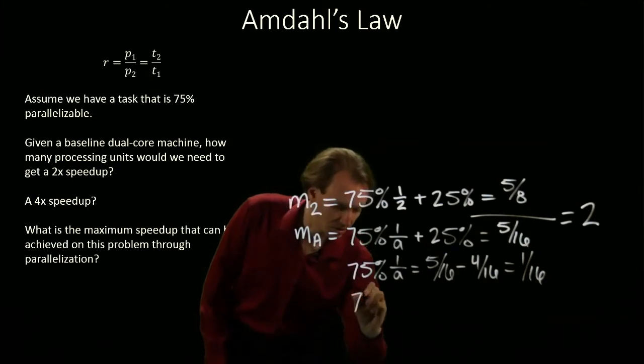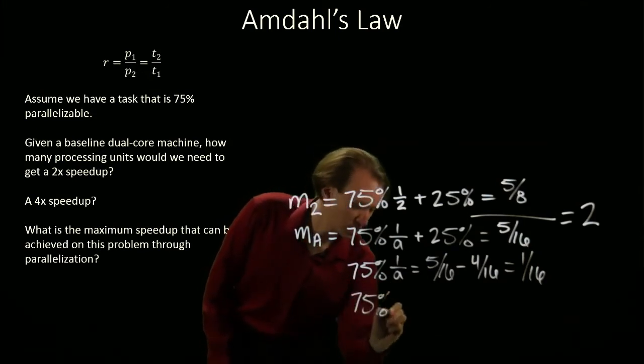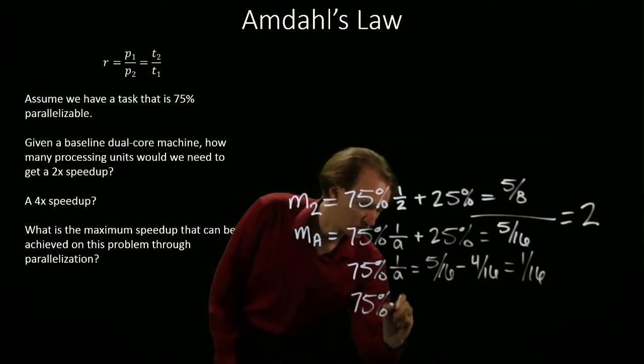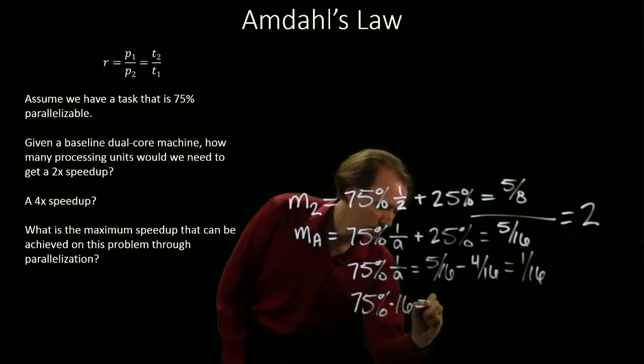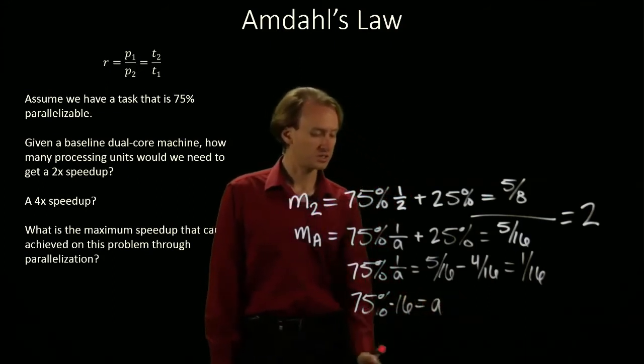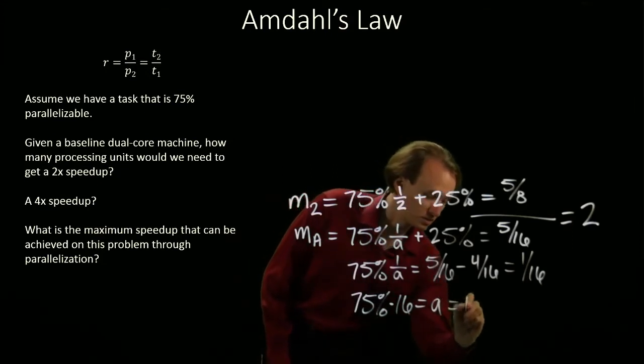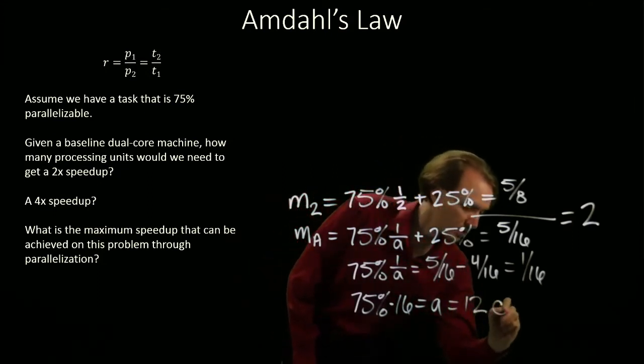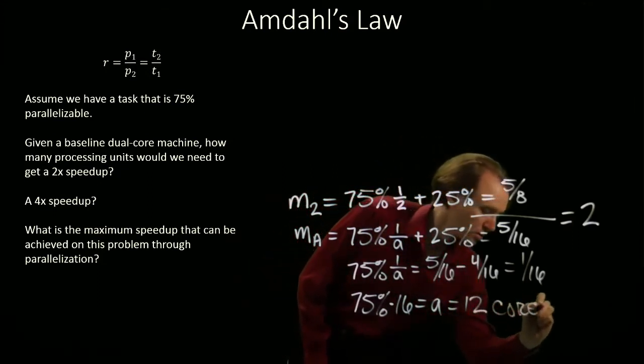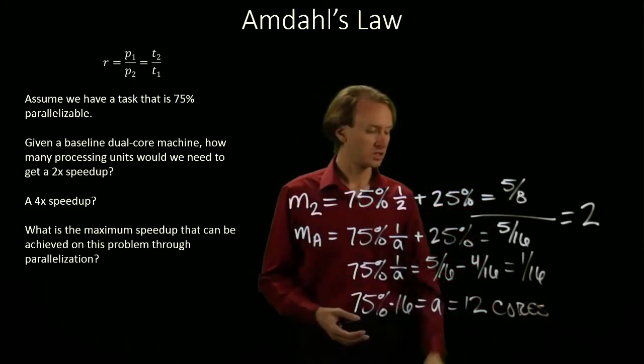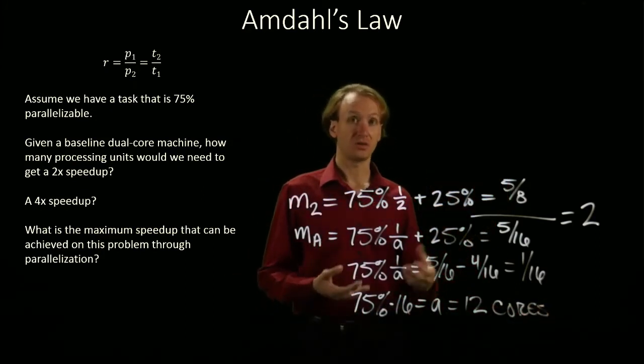And then I'll multiply both sides by A and divide by the 1 sixteenth. So, I'll get 75% times 16 equals A. And 3 fourths of 16 is 12. So, if I have 12 cores, then I can double my performance on this problem.